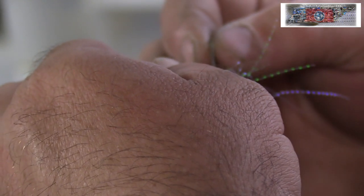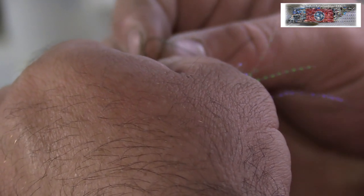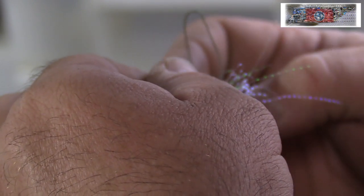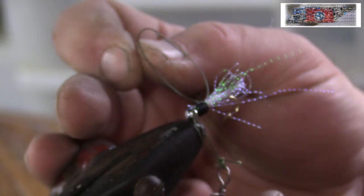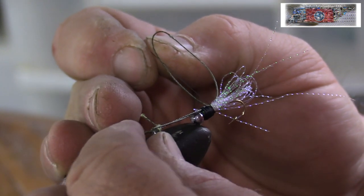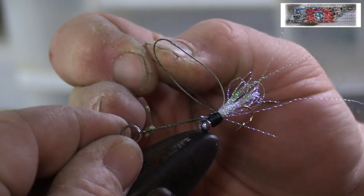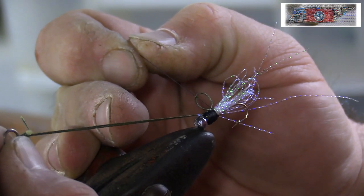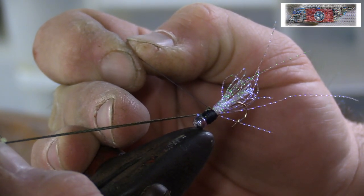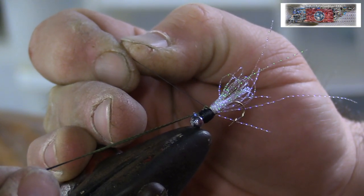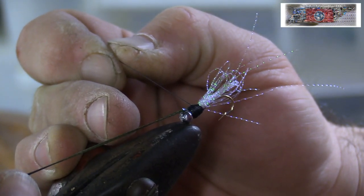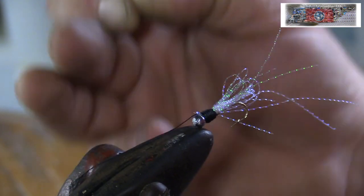Put it through this loop and just grab ahold of that end right there. You grab your little tool, pull it tight and it's going to take this end and pull it under the thread. There you go, pull it tight.